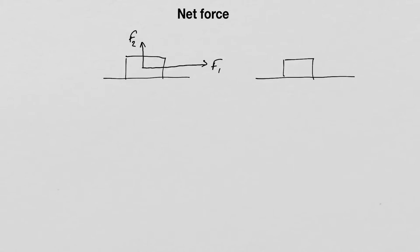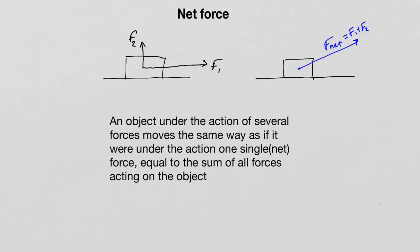The net force is equal to the sum of F1 and F2. This is a two-dimensional example, and finding the net force in two-dimensional cases is beyond the scope of the course. So I'm going to use a one-dimensional example, using a coordinate system with positive and negative orientation. The definition: an object under the action of several forces moves the same way as if under the action of one single net force, equal to the sum of all forces acting on it.